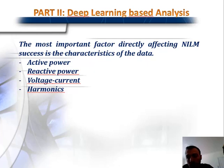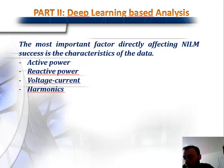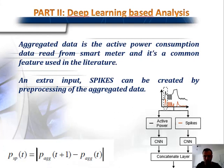For NILM analysis, the most important factor is the input type. In the literature, authors generally use active power because it is commonly available from smart meters. Other options include reactive power, voltage, current, and harmonics, but these require higher frequency resolution. Harmonics in particular are not available from smart meters, so the best choice for NILM analysis is active power. The aggregated data is the active power consumption data read from the smart meter and is the common feature used in the literature.